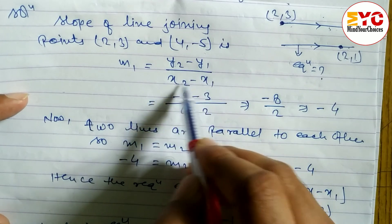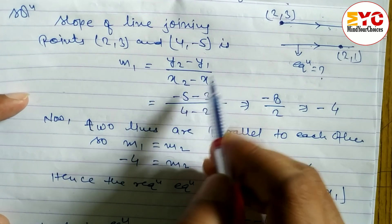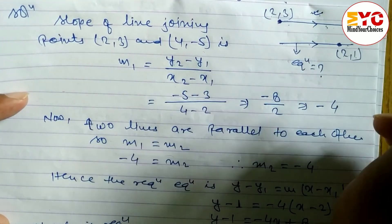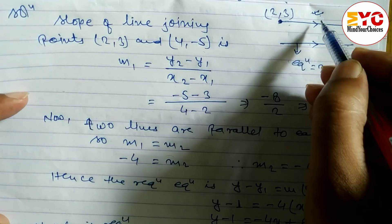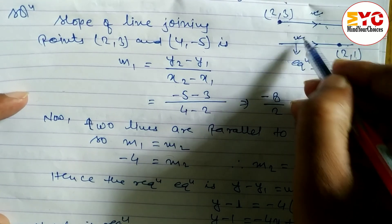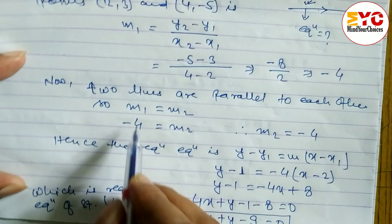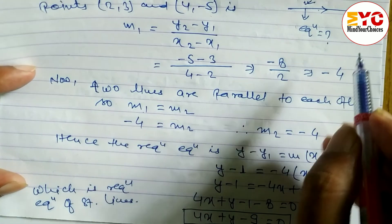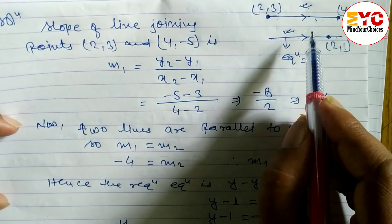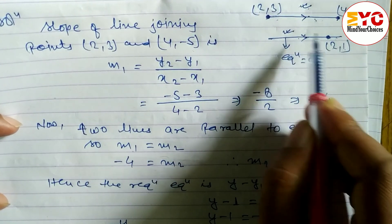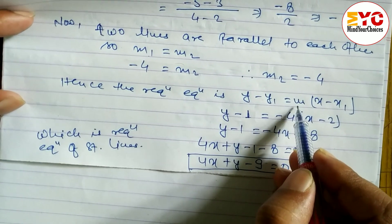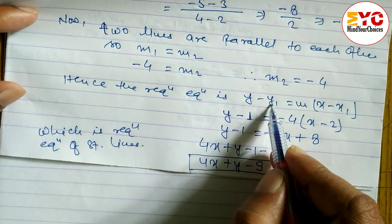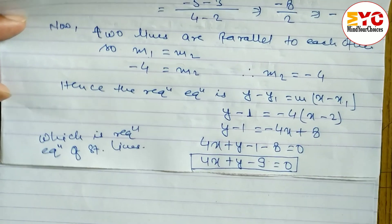To summarize: we used the formula m equals (y2 minus y1) divided by (x2 minus x1) to get the slope of the joining line. Since the lines are parallel, m1 equals m2, so we get the slope of the required line. Then using the one-point formula with the point (2, 1) and slope minus 4, we found the required equation.